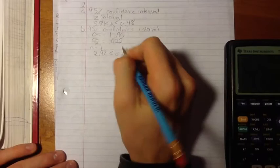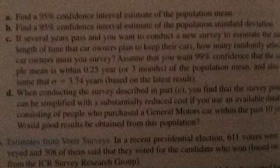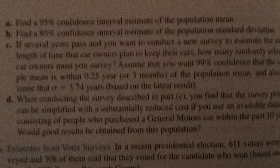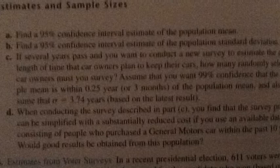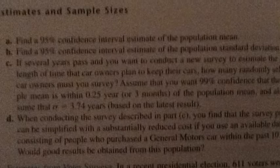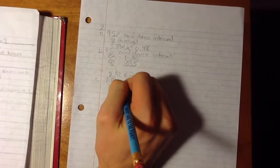If several years pass and you want to conduct a new survey to estimate the mean length of time that car owners plan to keep their cars, how many randomly selected car owners must you survey? Assume that you want a 99% confidence that the sample mean is within 2.5 years of the population mean, and also assume that the standard deviation is equal to 3.74 years. Because in 2c we are determining the sample size, we are going to use N mean. For N mean, we need to first find out what Z half alpha is. And to find that, we first need to know what alpha is.